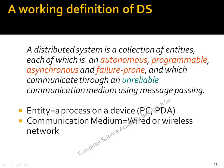The exact working definition of the distributed system is: it is a collection of entities, each of which is autonomous, programmable, asynchronous, and failure-prone, and which communicate through an unreliable communication medium using message passing. That is the exact definition describing what a distributed system is and how it works.